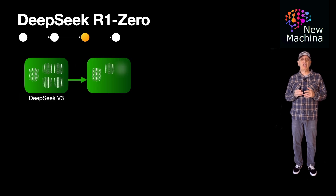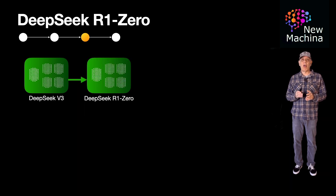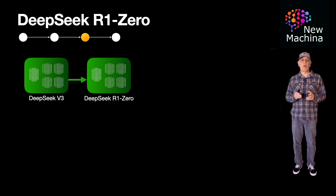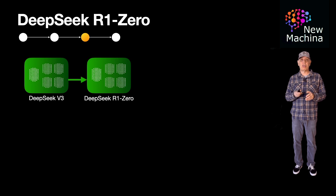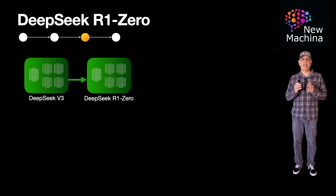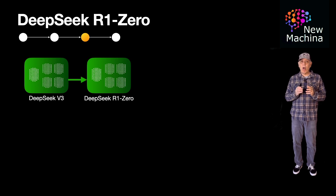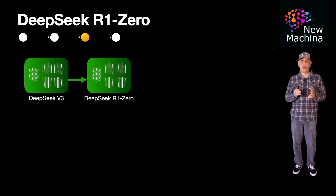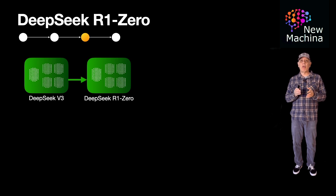After DeepSeek V3, the first DeepSeek reasoning model is DeepSeek R1-Zero, released in January 2025. Unlike traditional models that rely on supervised fine-tuning as an initial step, DeepSeek R1-Zero was trained exclusively using large-scale reinforcement learning. This approach allowed the model to autonomously develop reasoning capabilities through trial and error, without the need for pre-labeled datasets.